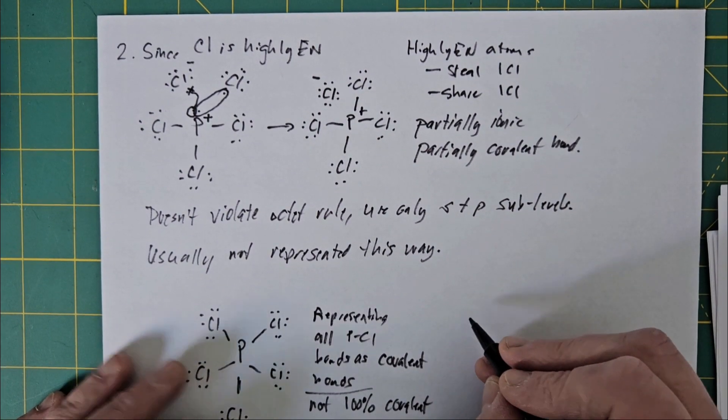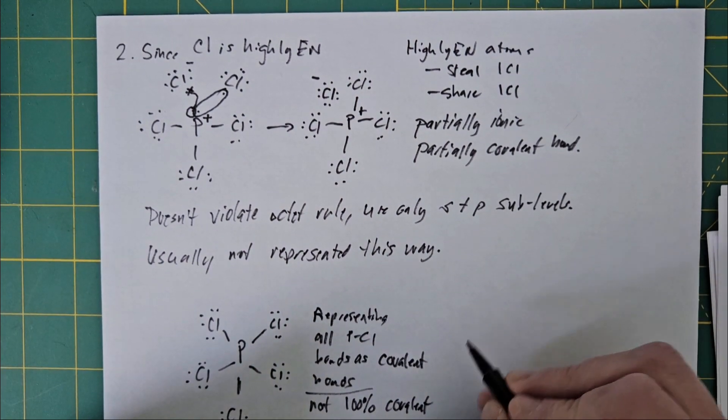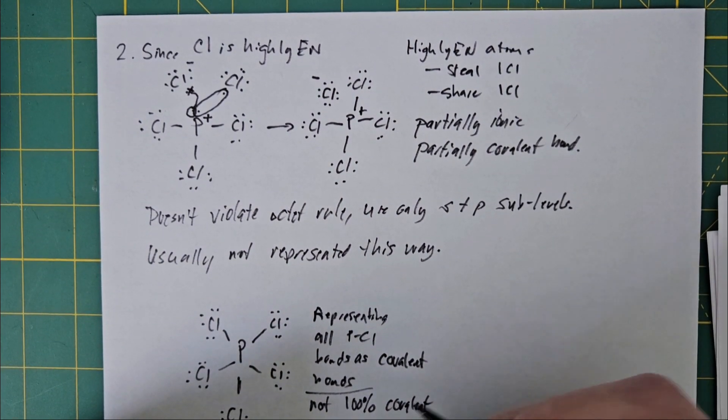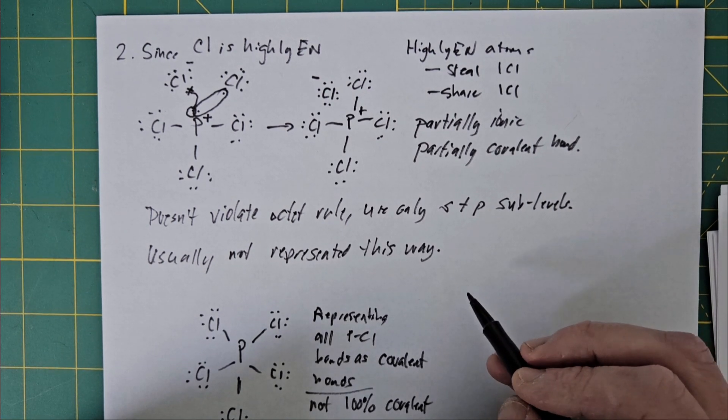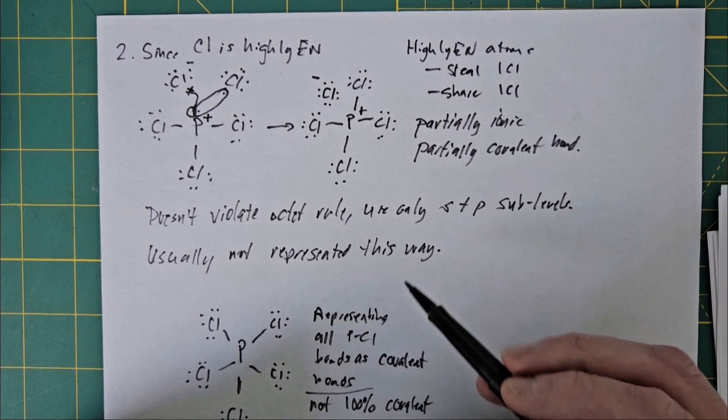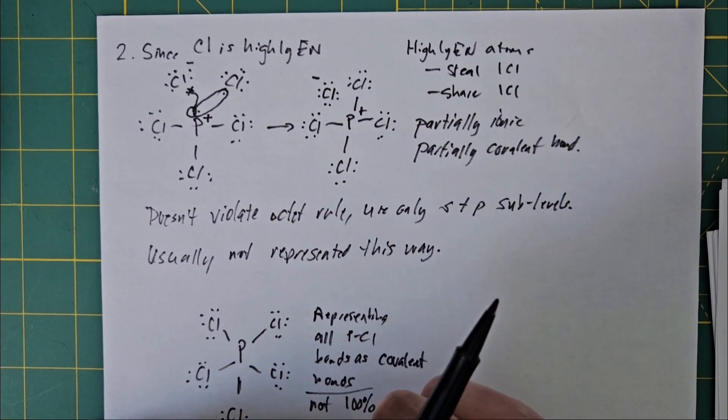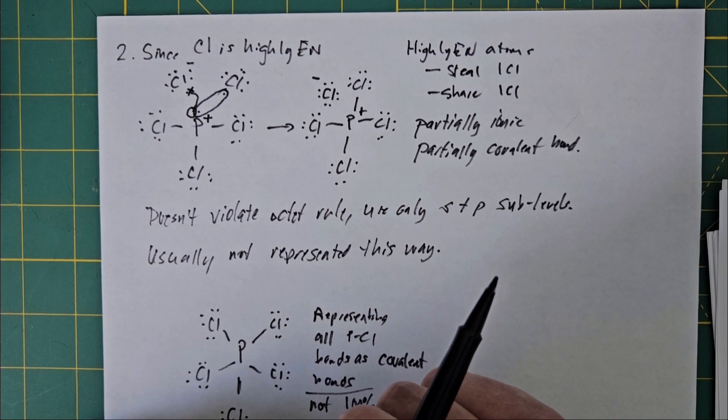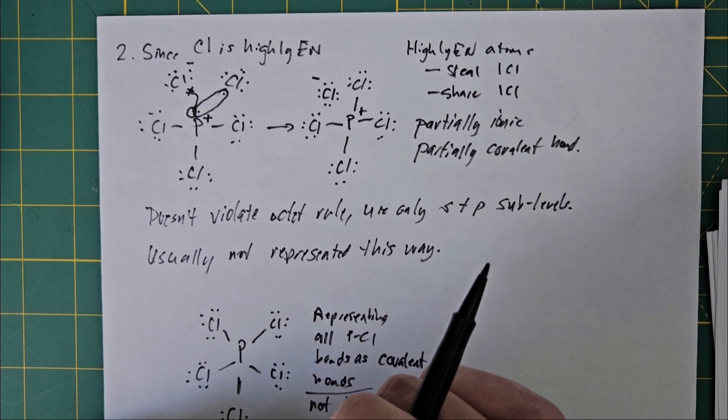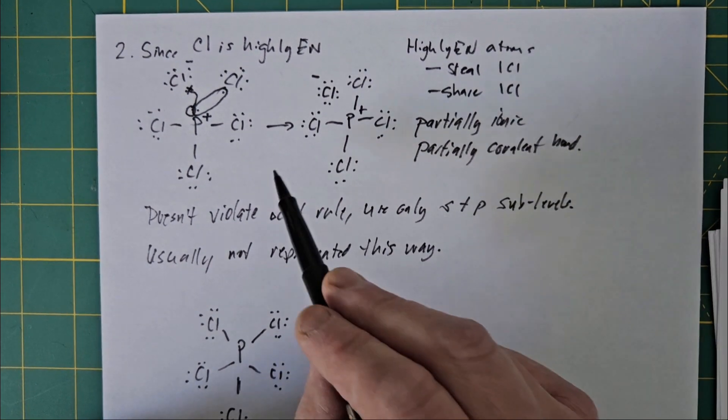Now, if this only happened in phosphorus chloride, I don't think it would be a big enough idea to even bring up, but this actually happens quite often. So anything where you'd end up having something with more than octet electrons, this is really happening instead. So any time you see compounds involving, let's say, noble gases, this has to happen.